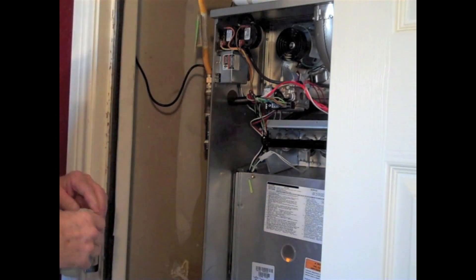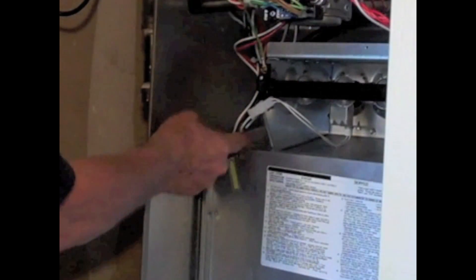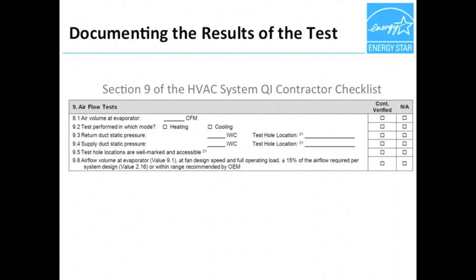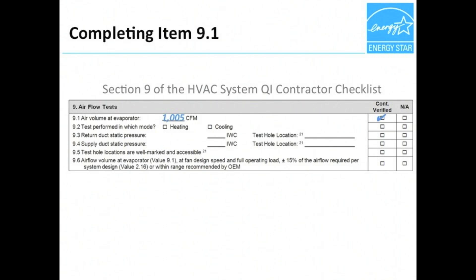Rob now removes the probes and plugs the holes with a plug, foil tape, or in the case of wire penetrations, a non-permanent putty. Now Rob can complete Section 9 of the checklist. In item 9.1, he records that the air volume of the evaporator was 1005 CFM. In item 9.2, he records that the test was conducted in cooling mode, which will help the rater duplicate this test in the same conditions. In items 9.3 and 9.4, he records the static pressure in the supply duct and return duct, and provides a general description of the location of each hole, such as "left top of cabinet," to help the rater locate these holes. In item 9.5, he checks the box to confirm that the test hole locations are well marked and accessible. Finally, in item 9.6, he confirms that the airflow volume reported in item 9.1 is within 15% of the designed airflow reported in item 2.16.